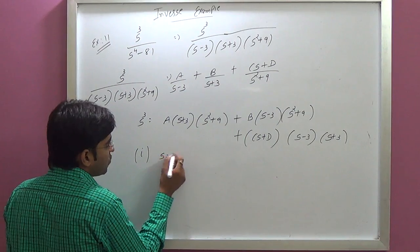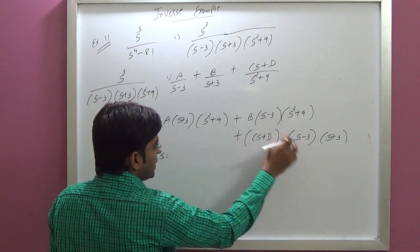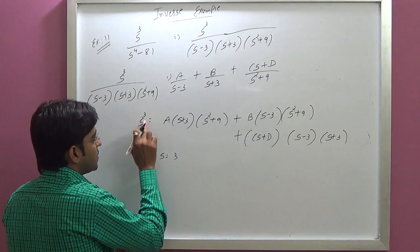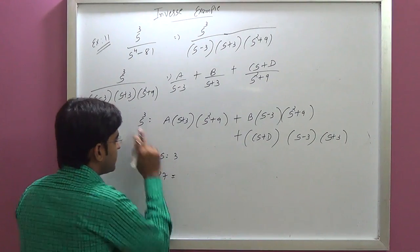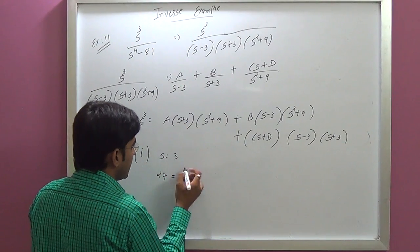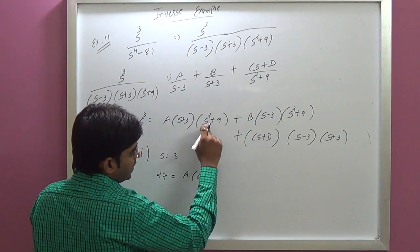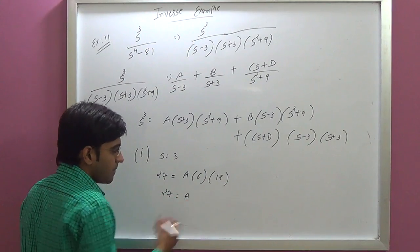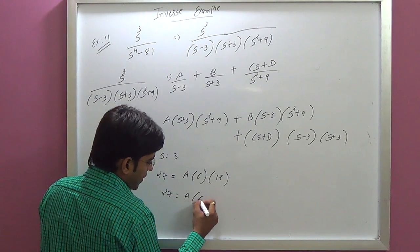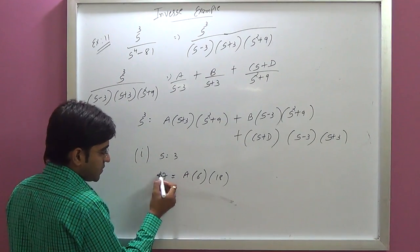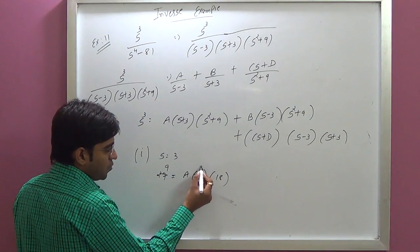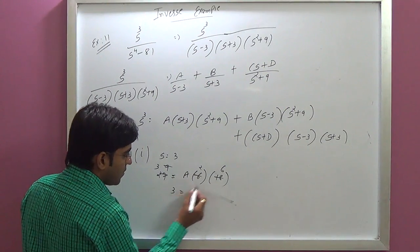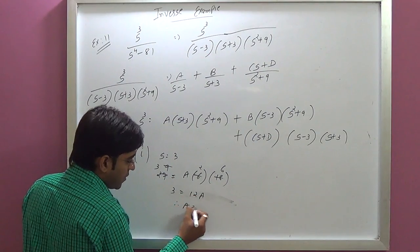First condition: to find A, we put S equal to 3. Then the B and D terms go to zero. So 27 equals A times (3 plus 3)(9 plus 9), that means 27 equals A times 6 times 18, which gives A equal to 1 by 4.